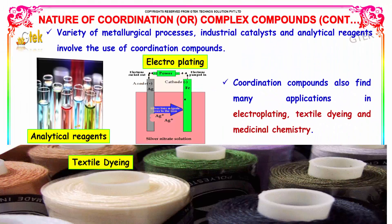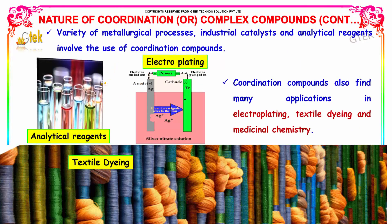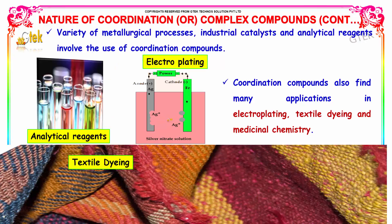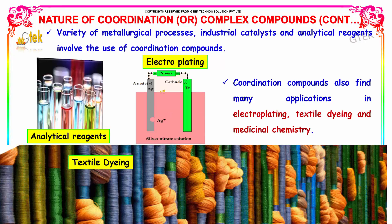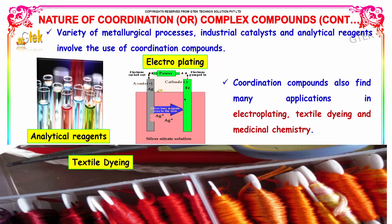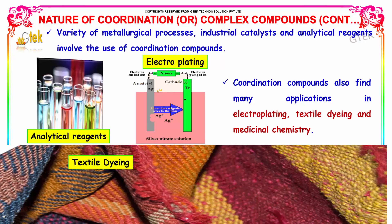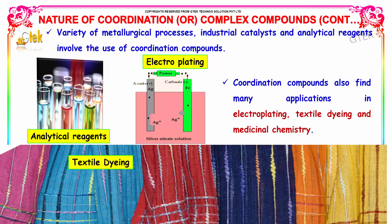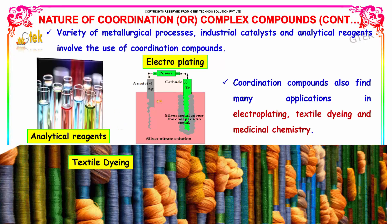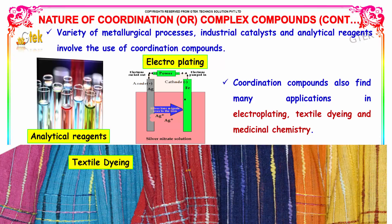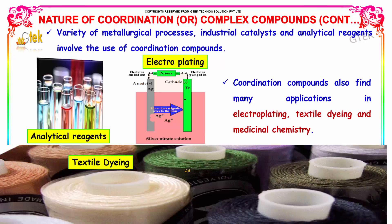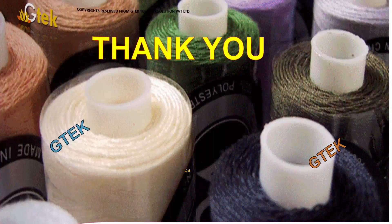A variety of metallurgical processes, industrial catalysts, and analytical reagents involve the use of coordination compounds. Coordination compounds also find many applications in the fields of electroplating, textile dyeing, and medicinal chemistry.